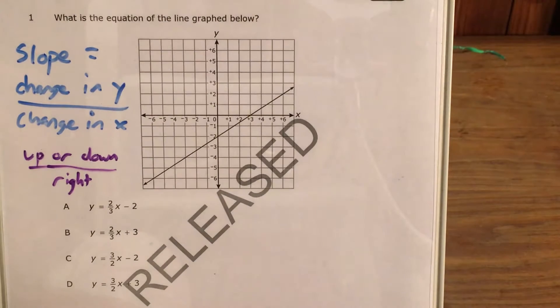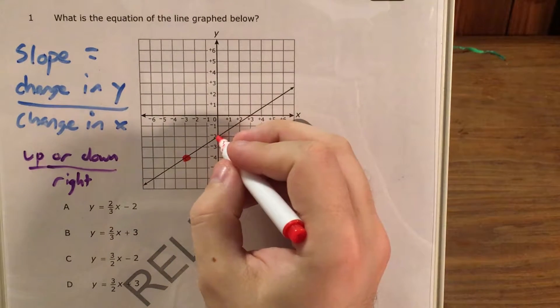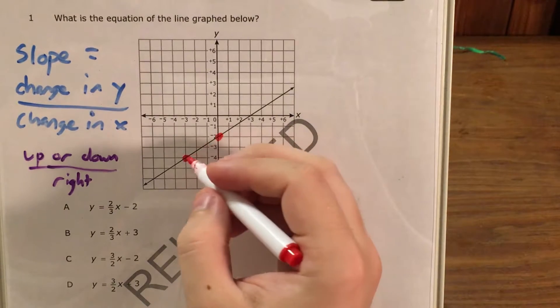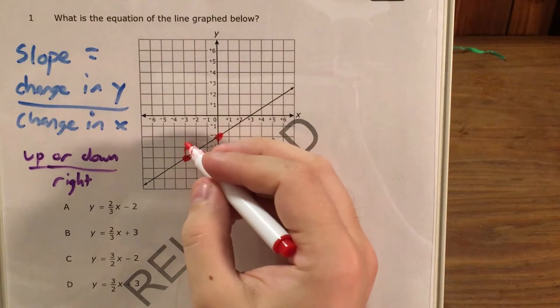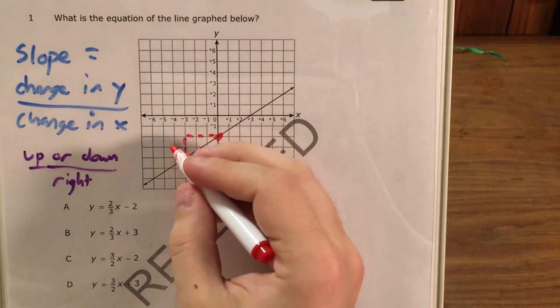So if I'm going to go ahead and do that on this graph, I'm going to just find a couple points where I end up meeting the grid lines. So let's go with this one and this one. If I want to go from here to here, that means I'm going up two as I go right three.